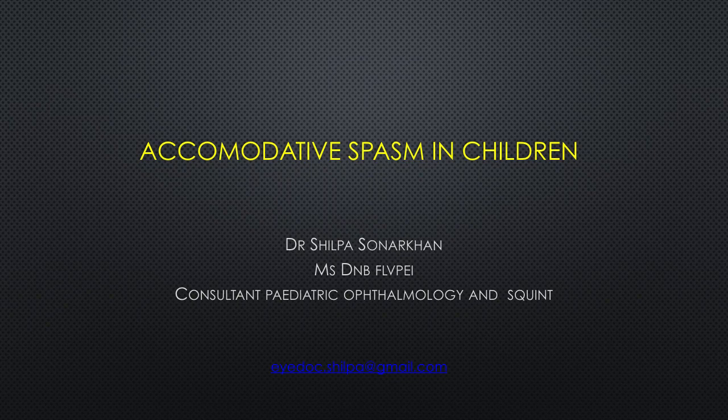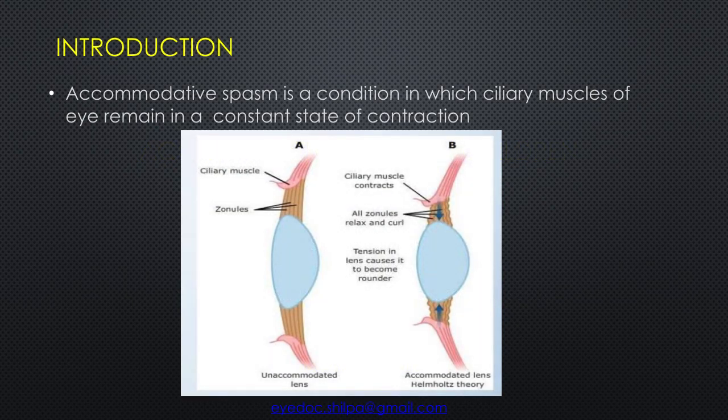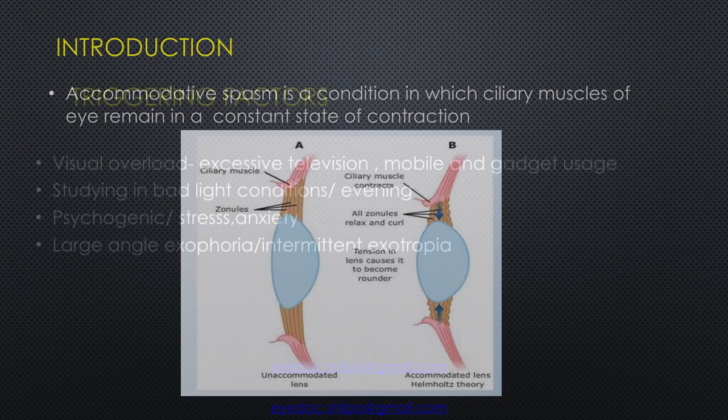Hi everyone. In this presentation we shall be discussing about accommodative spasm in children. Accommodative spasm is a condition in which the ciliary muscles of the eye remain in a constant state of contraction.